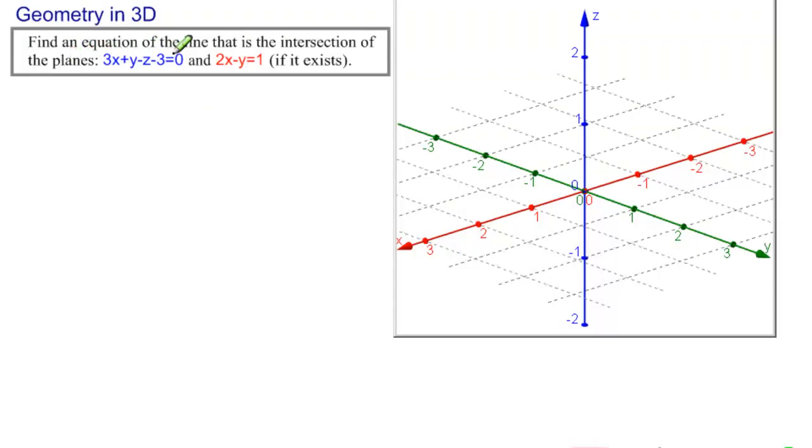The problem reads, find an equation of the line that is the intersection of the planes 3x plus y minus z minus 3 equals 0, and 2x minus y equals 1 if it exists.